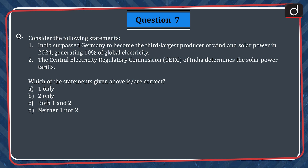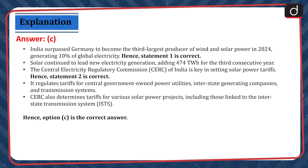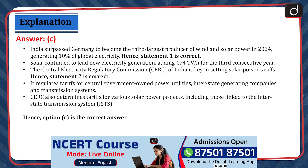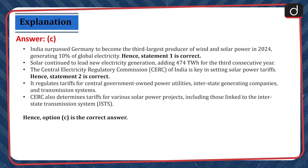A. One only. B. Two only. C. Both one and two. D. Neither one nor two. The correct answer is option C. India surpassed Germany to become the third largest producer of wind and solar power in 2024, generating 10% of global electricity. Hence, statement 1 is correct. Solar continued to lead new electricity generation, adding 474 TWh for the third consecutive year. The Central Electricity Regulatory Commission of India is key in setting solar power tariffs. Hence, statement 2 is correct. It regulates tariffs for central government-owned power utilities, interstate generating companies and transmission systems. CERC also determines tariffs for various solar power projects, including those linked to interstate transmission systems. Hence, option C is the correct answer.